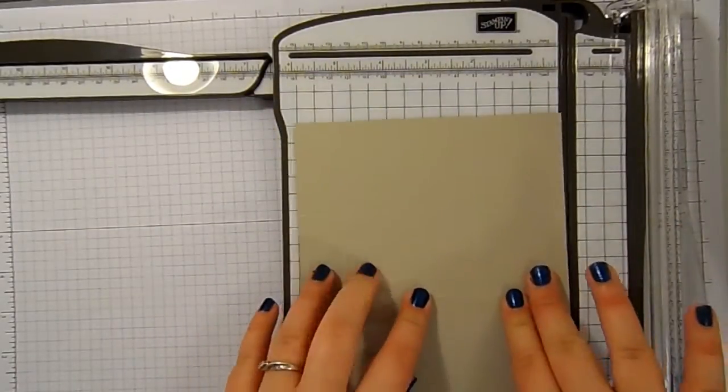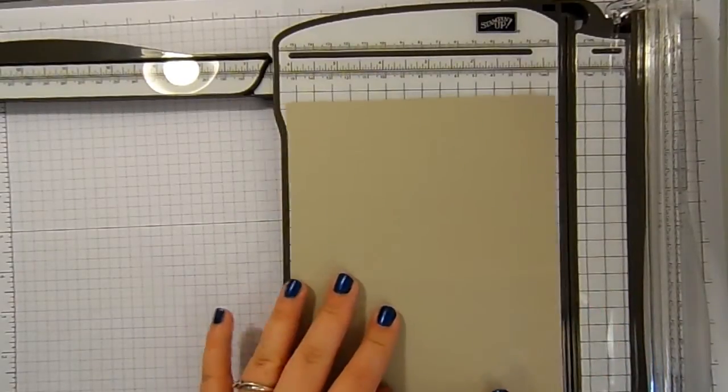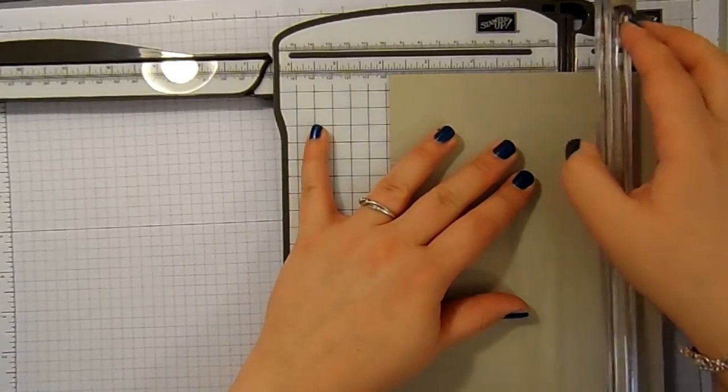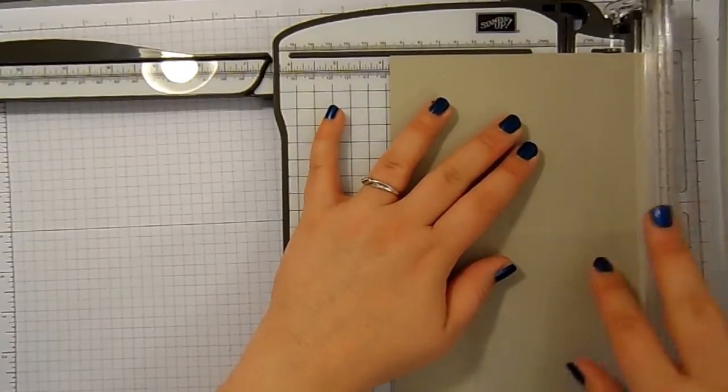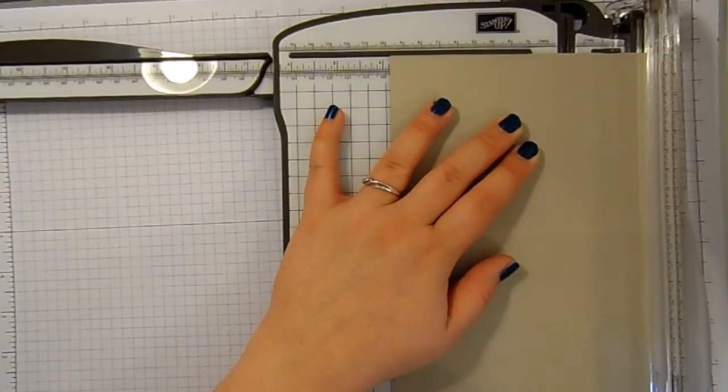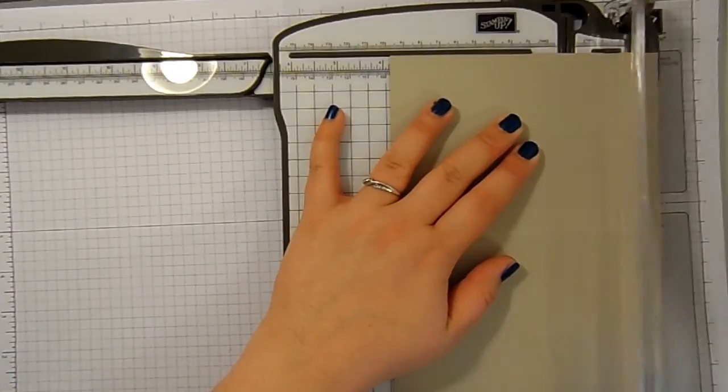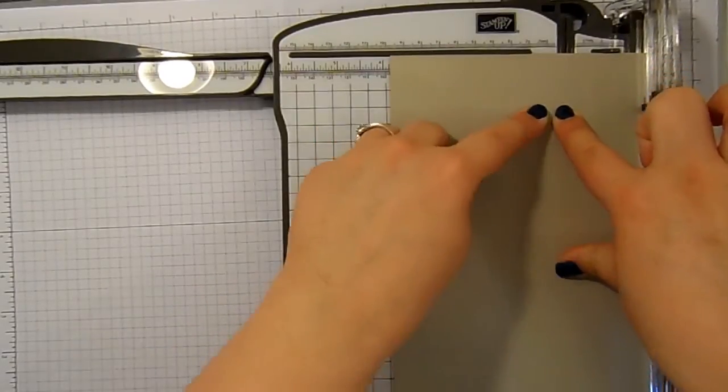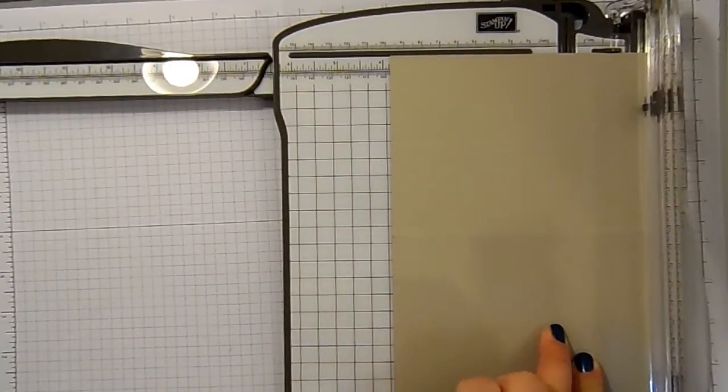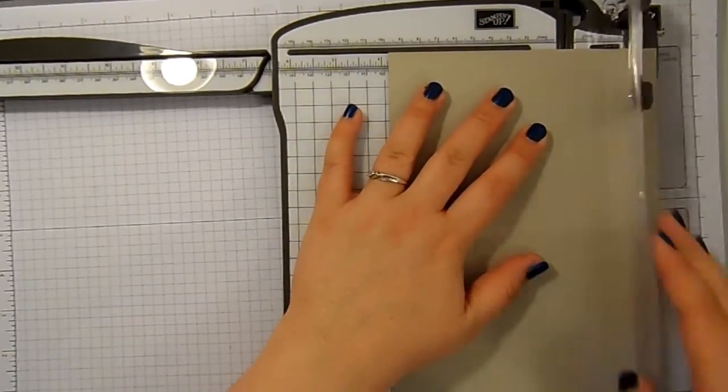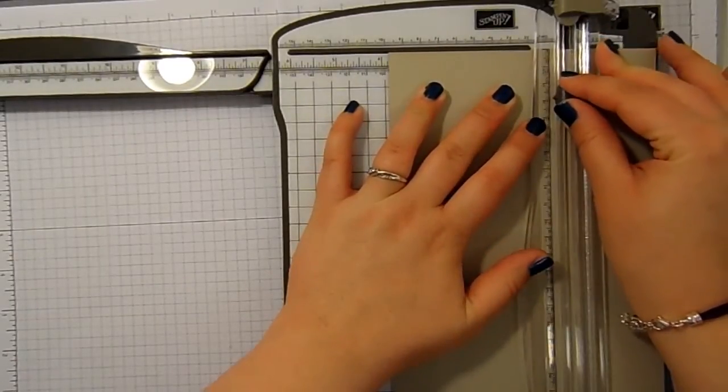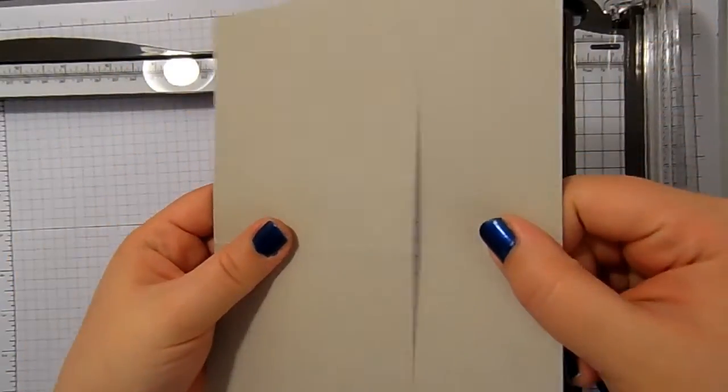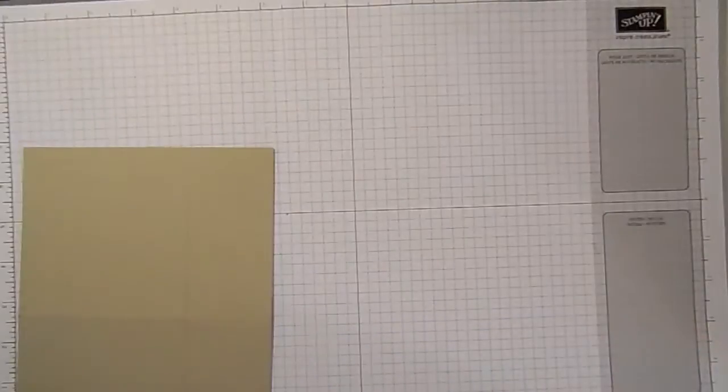And then we're going to put our card back in with the unscored section on the right. And we're going to put our scoring blade away and we're going to use our cutting blade this time. So insert your card so that score line sits in the groove of your trimmer. And we're going to start cutting at this first score line here and cut all the way down to that end score line. So you end up with that. And we'll take our trimmer away.